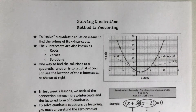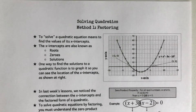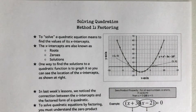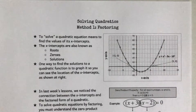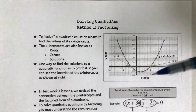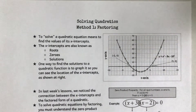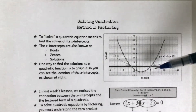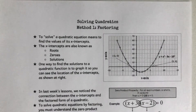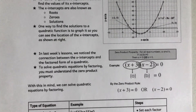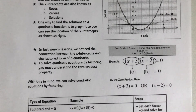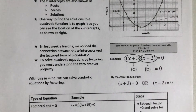In today's video we are going to learn how to solve a quadratic through factoring. Solving a quadratic simply means to find the value of its x-intercepts, which are also known as roots, zeros, or solutions. One way to find the solutions is to graph the function and see the location of the x-intercepts. For example, this parabola has x-intercepts at negative 2 and 5, so the solutions are negative 2 and 5. To solve by factoring, we need to understand the zero product property.